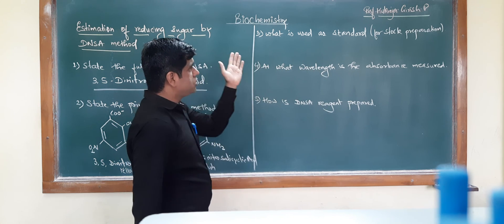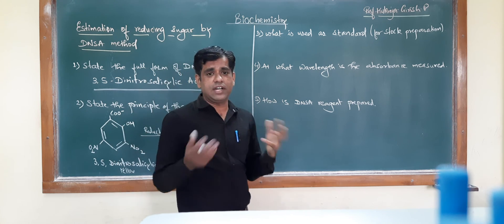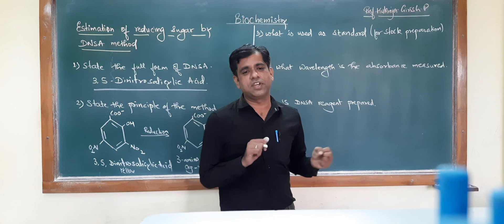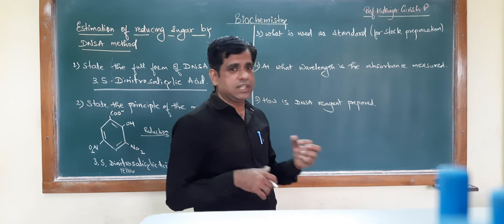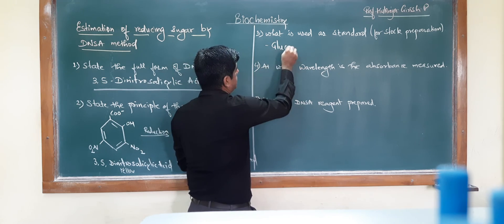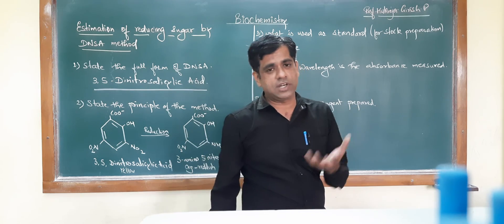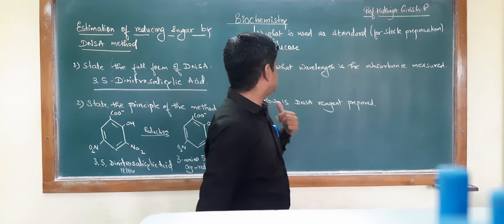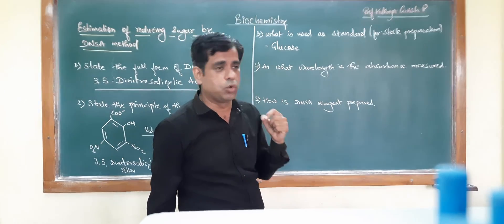What is used as the standard for preparation of your stock solution? You can use any reducing sugars. In our earlier videos, we have seen what exactly these reducing sugars are and what are the examples of these reducing sugars. Most commonly, the sugar used for preparation of stock is glucose. No doubt, you can go for fructose or maltose, but the most commonly used sugar for preparation of the standard is glucose.